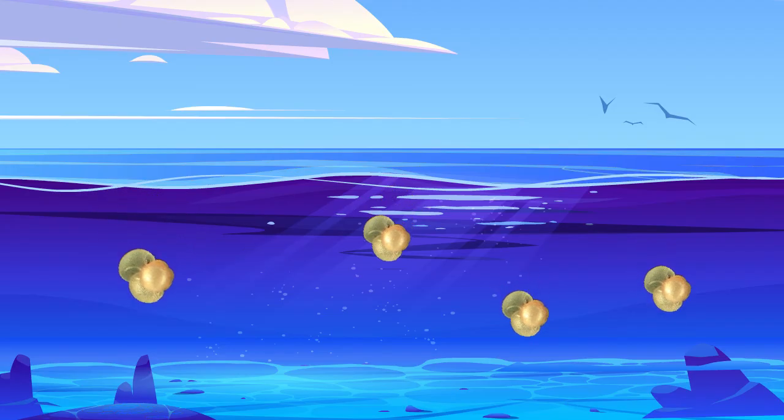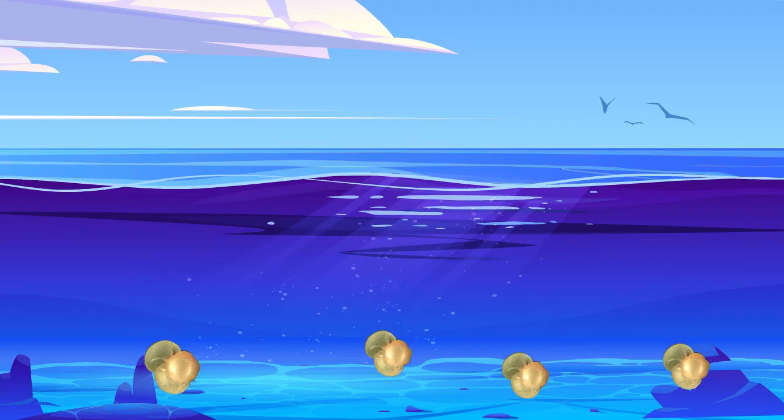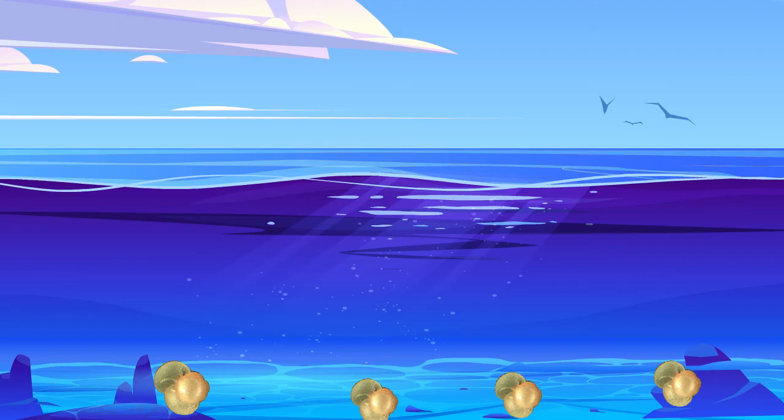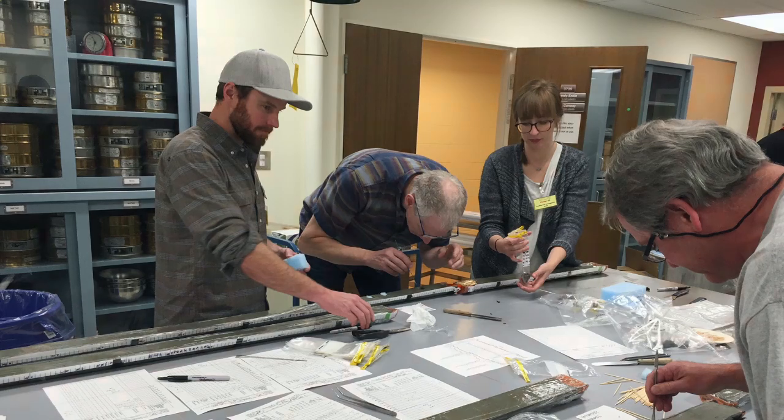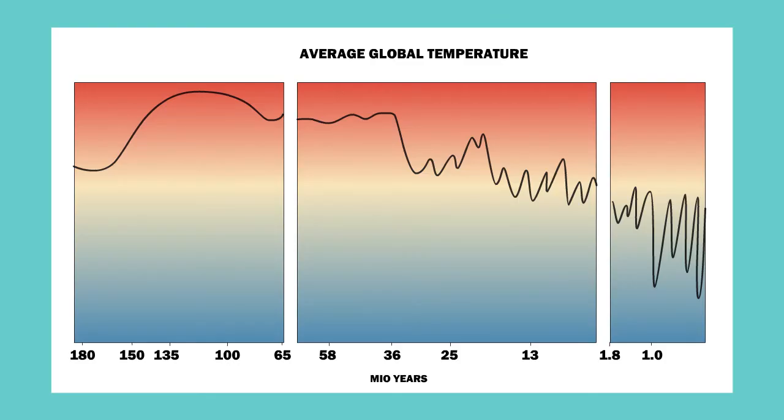When the foraminifera die, their shells sink to the bottom of the ocean and are, at least in part, preserved in the sediments. By analyzing the layers of marine sediments formed during different geological periods, and in particular by looking at the isotopic composition of the foraminifera in them, geologists are therefore able to reconstruct the variations of the O18-O16 ratio over time, and in turn to estimate the temperatures in the very distant past, up to several hundred million years ago.